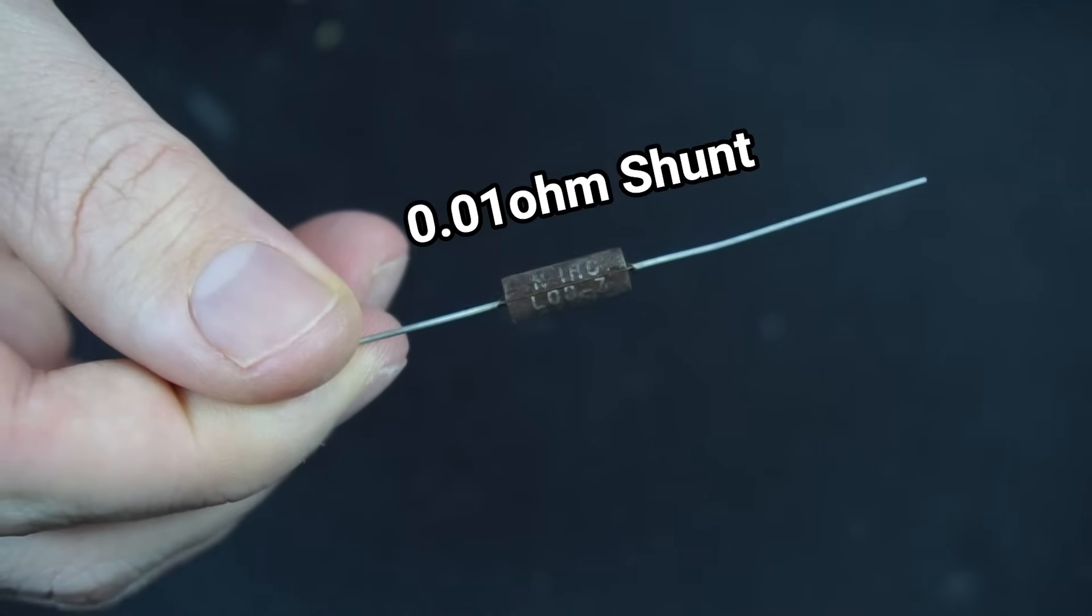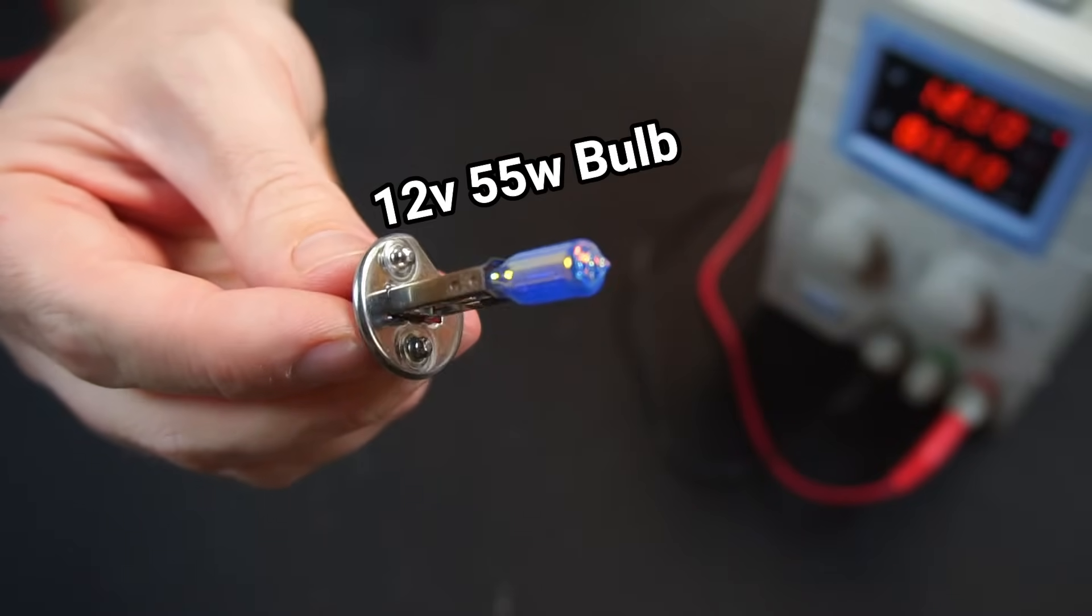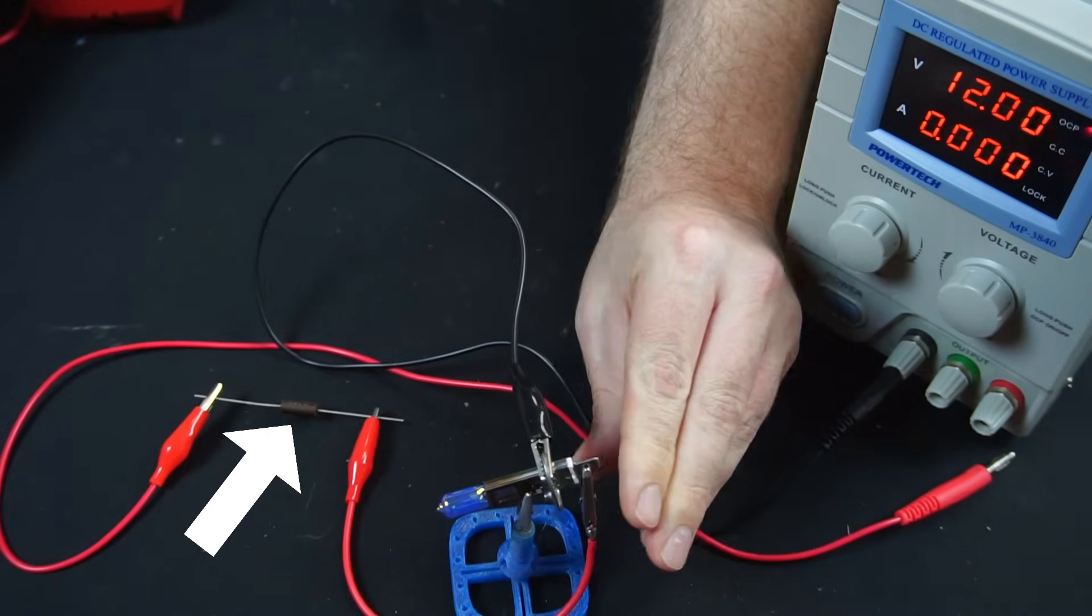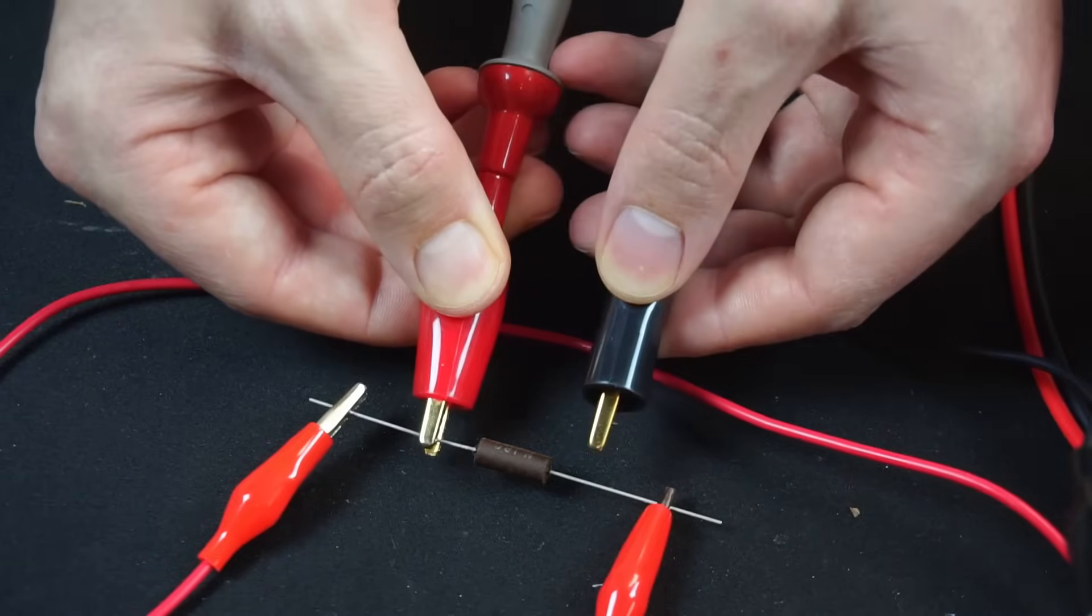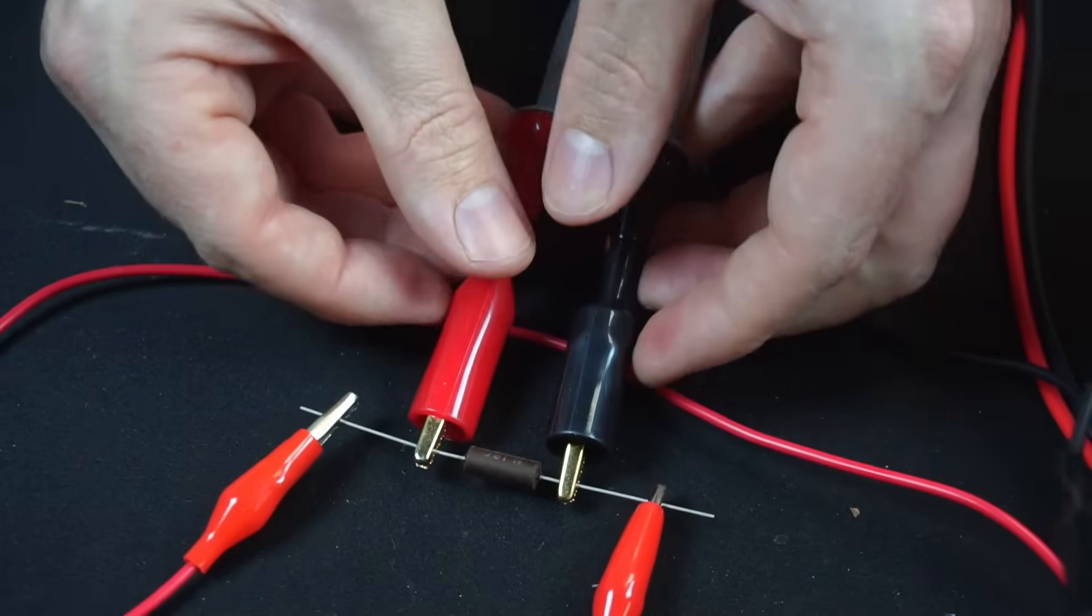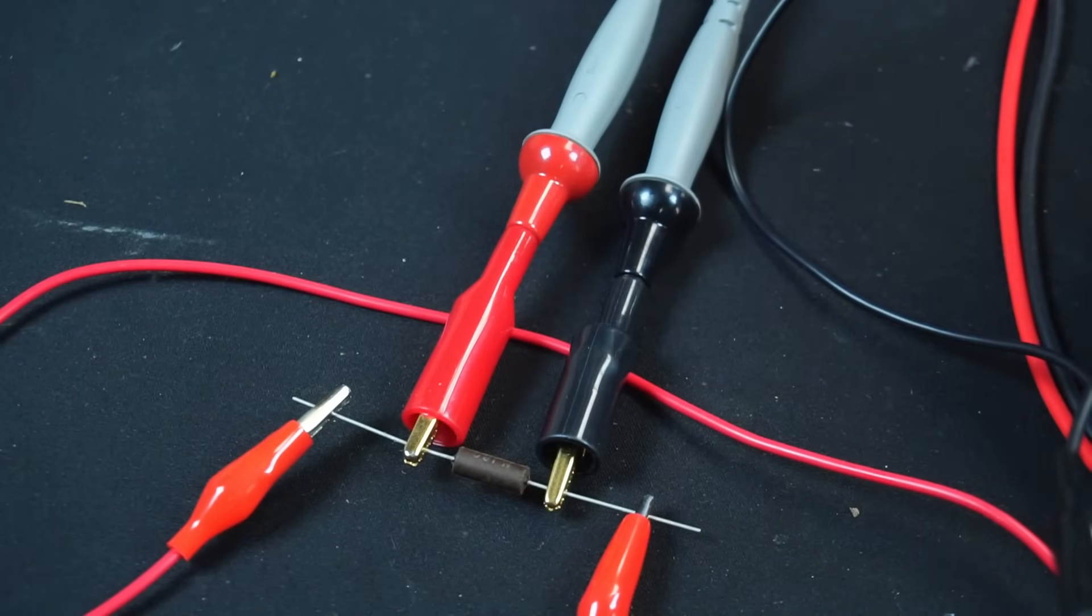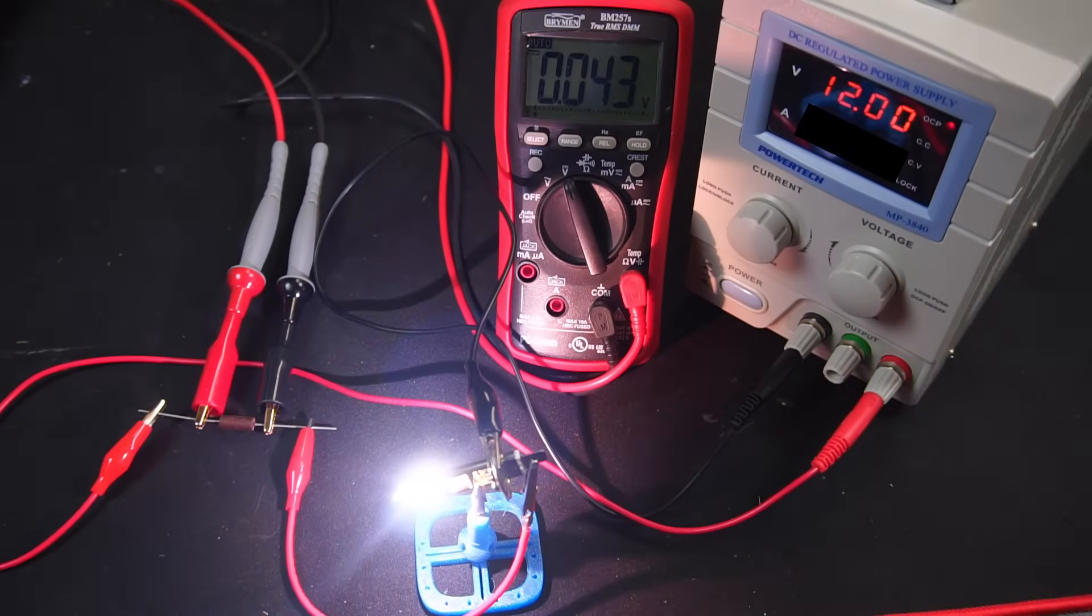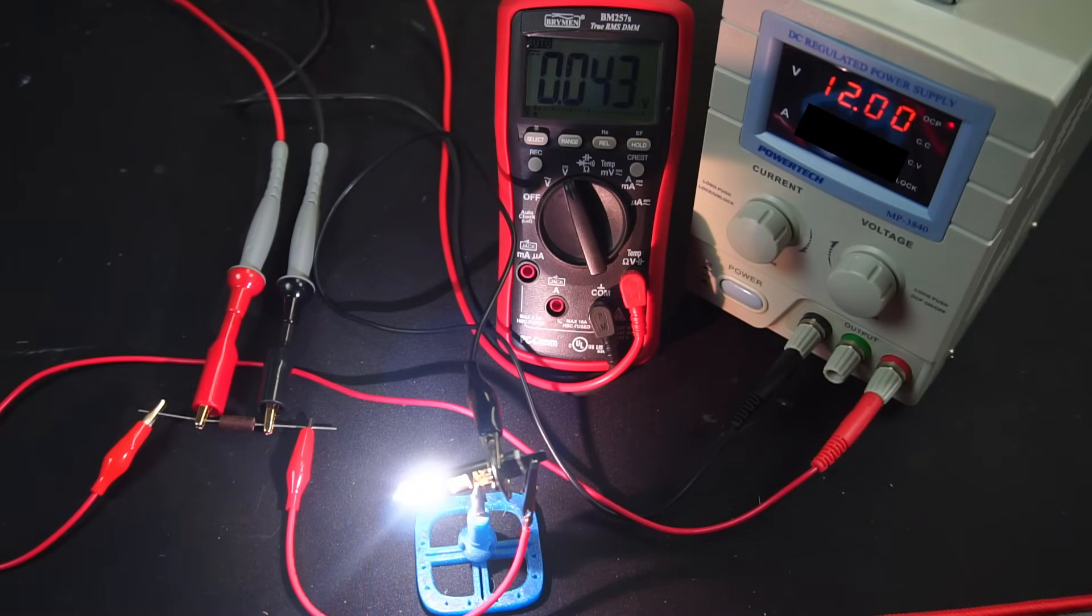So now you know how to calculate the current from any value of shunt using this method. Pretty cool, eh? Okay, time to put theory into practice with a demonstration. I'll use this 10 milliohm shunt, and this 12 volt bulb will act as my load. The shunt is connected between the power supply and load. I'll then attach my multimeter leads across the shunt to measure the voltage drop, just as I showed in my whiteboard drawing.